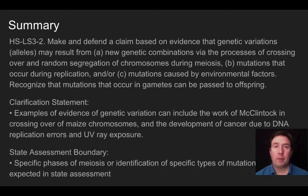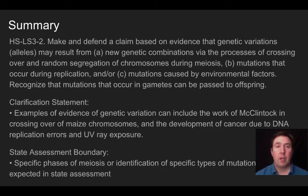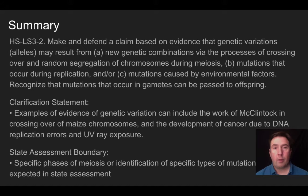To sum up, you should understand genetic variations based on alleles, that variations come from new combinations through crossing over and random segregation of chromosomes during meiosis. You should know that mutations during replication and from environmental factors can lead to new variations. Mutations occurring within the germline are the ones passed on to offspring. You should know that McClintock worked with corn and her study of chromosomes led to the knowledge of crossing over. Cancer from DNA replication errors or UV exposure that impacts the germline are examples of mutations that add new variants or genetic combinations.